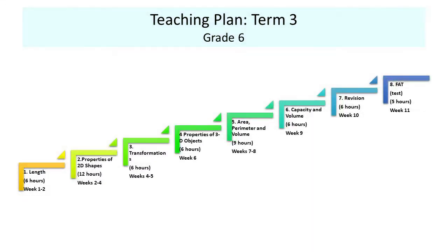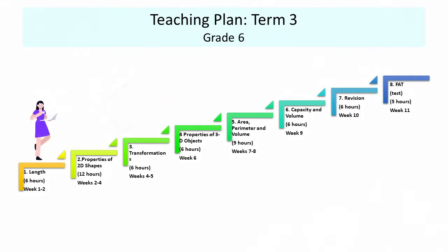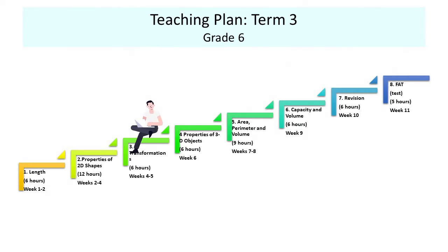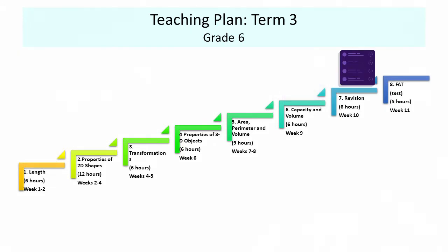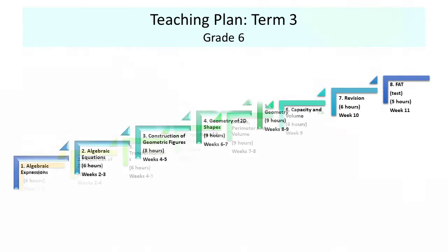In grade 6, there are also 8 topics for term 3: length, properties of 2D shapes, transformations, properties of 3D objects, area, perimeter and volume, capacity and volume, revision, and a formal assessment task.